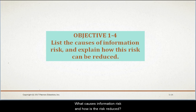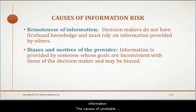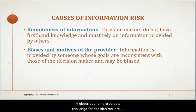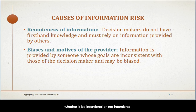What causes information risks and how is the risk reduced? As the business environment becomes more complex, decision makers are more likely to receive unreliable information. One reason could be the remoteness of information — a global economy creates a challenge for decision makers to receive first-hand knowledge. Decision makers must rely on information provided by others, which increases the risk of the information being misstated, whether intentional or not.